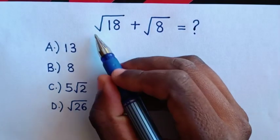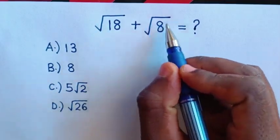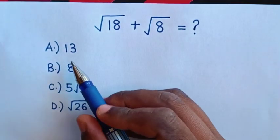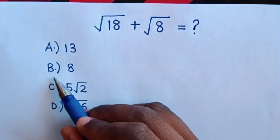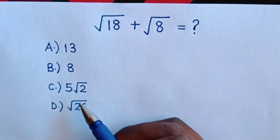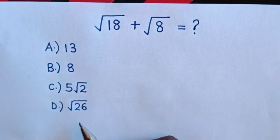Hello, how to solve square root of 18 plus square root of 8. Choose between A which is 13, B 8, C 5 square root of 2, D square root of 26.